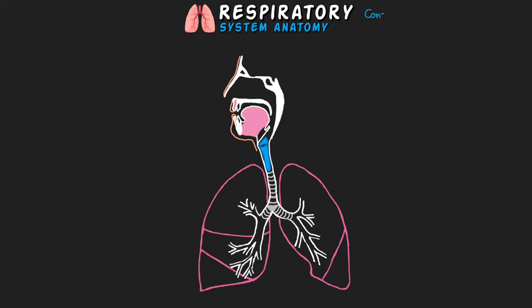The respiratory system consists of all the organs involved in breathing and has two very important functions. One is to bring oxygen into our body — needed for cellular respiration — and the other is to rid our bodies of carbon dioxide, which is a waste product of that cellular respiration. When we have issues with our respiratory system it makes it harder to get the oxygen we need and to get rid of CO2, each coming with its own set of problems.